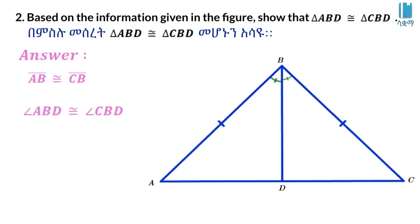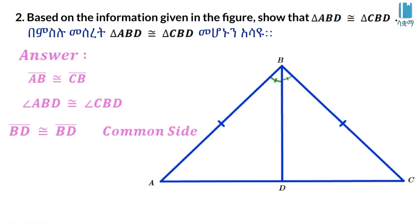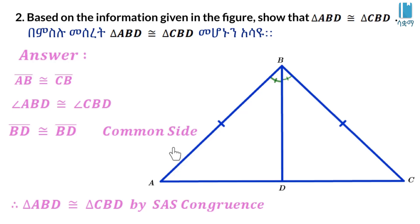The angle ABD and the angle CBD are equal. This is the same way for the angle. Side BD is shared. The angle ABD is equal to the angle ABD, and the angle BD is equal to CBD. Side angle side — from the angle side angle side.